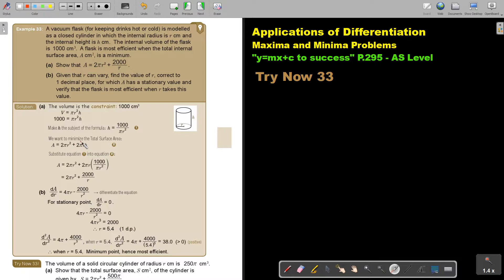We want to minimize the total surface area. So the total surface area of a flask, remember, it is area of base times 2 and then it is the circumference, 2 pi R times the height. Substitute equation 1 into equation 2. So substitute that height in. You get this.